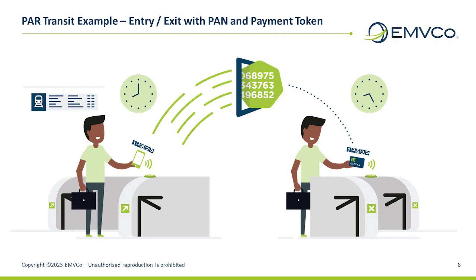For subsequent fare calculation and payment: since the PAR data is the same for both entry and exit, the transit operator system can use it to link each event in the journey. With this information, the transit system can correctly calculate the appropriate fare according to its rules — be it a single journey based on a fixed fee, zone-based charges, or even one-day multiple trip fares. Once calculated, the transit operator system initiates a single payment transaction using the token or PAN from the initial tap-in entry.